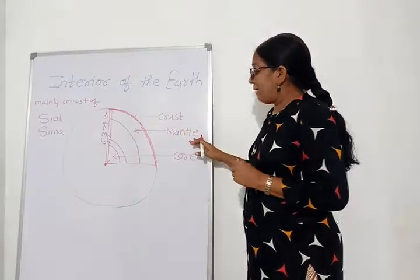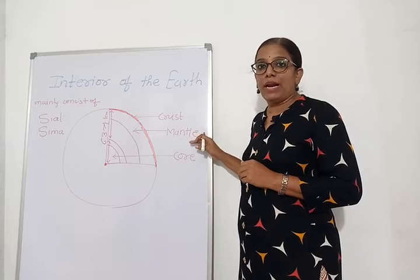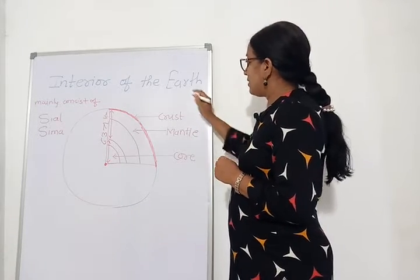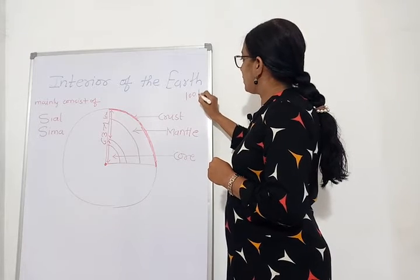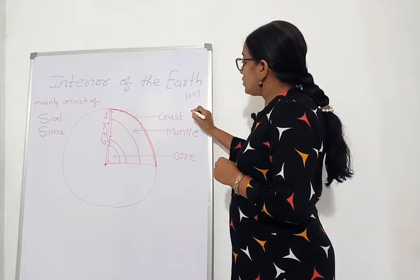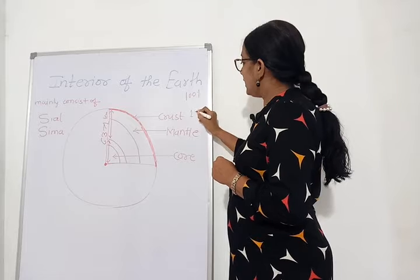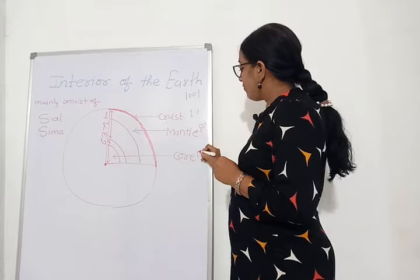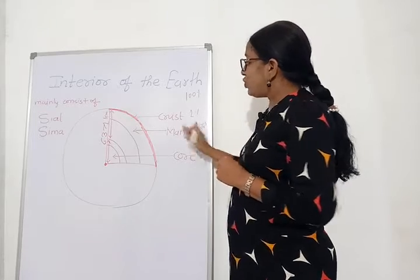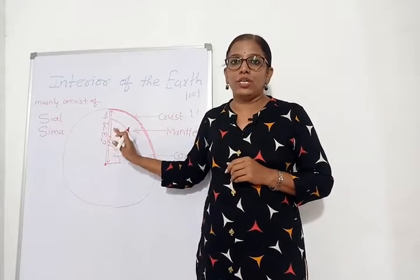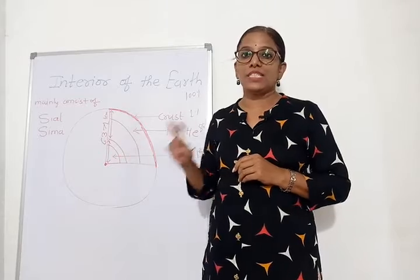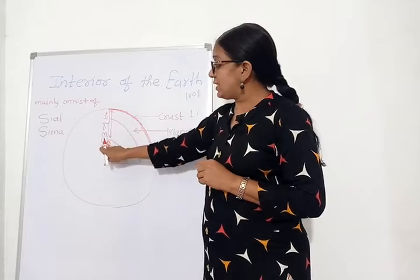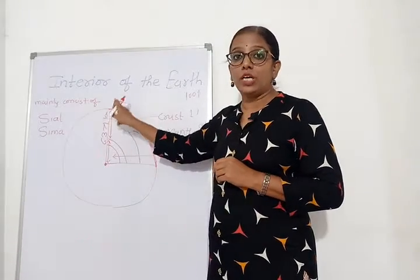Next is the mantle, the second layer of the earth. If we count these three layers as 100%, the crust consists of only 1%, the mantle consists of 84%, and the core consists of 15%. So the majority of the earth is actually covered by the second layer, the mantle. The radius of the earth is 6,371 km.